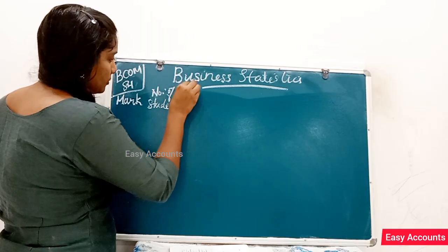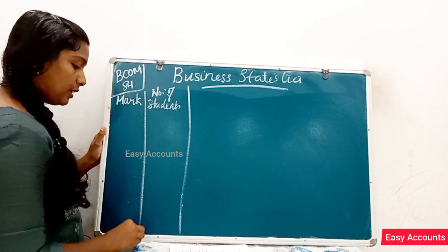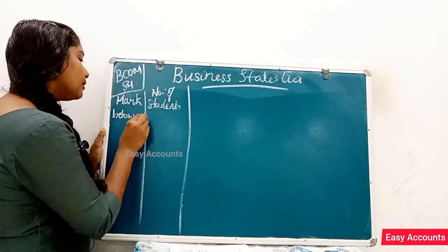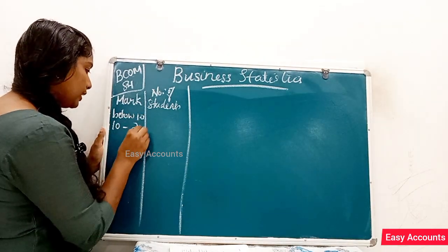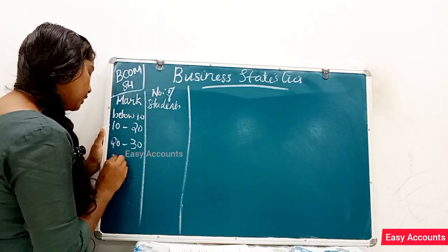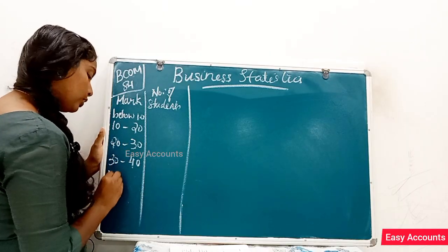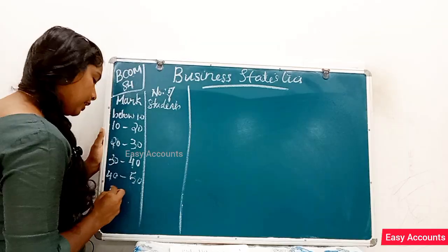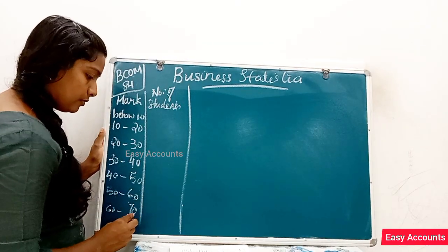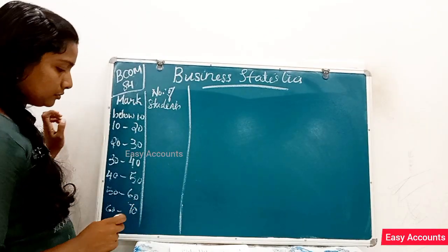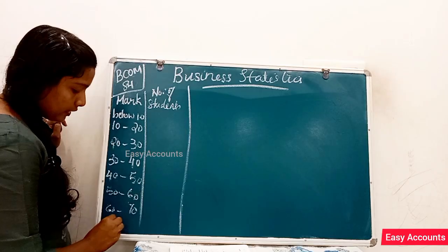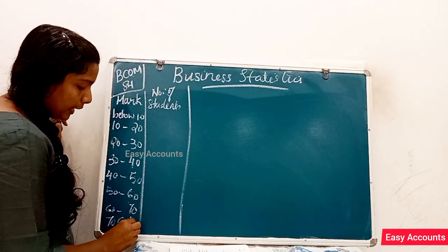We are looking at a question. Marks: below 10, then 10 to 20, 20 to 30, 30 to 40, 40 to 50, 50 to 60, 60 to 70, 70 and above.